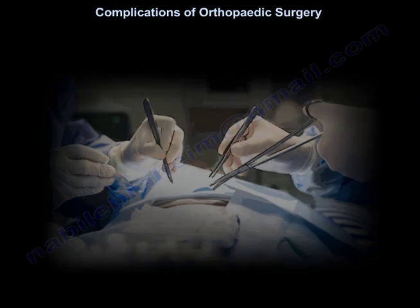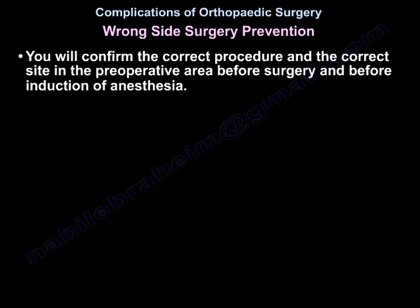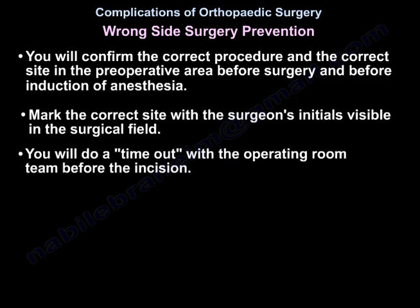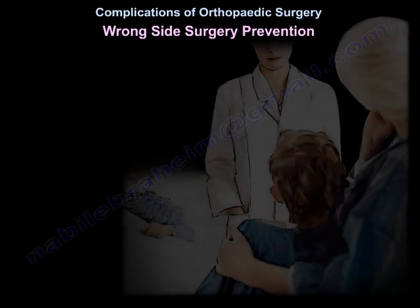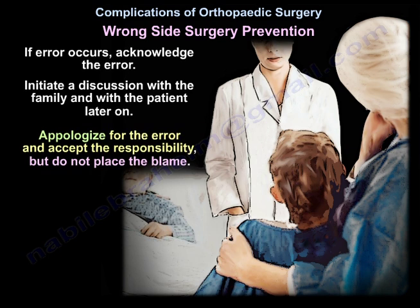Lack of follow-up is also an error. For wrong-side surgery prevention: confirm the correct procedure and site in the preoperative area before surgery and before induction of anesthesia; mark the correct site with the surgeon's initials visible in the surgical field; perform a timeout with the operating room team before the incision; and display images and x-rays in the operating room. If an error occurs, acknowledge it, initiate a discussion with the family and patient, apologize, accept responsibility, but don't place blame.